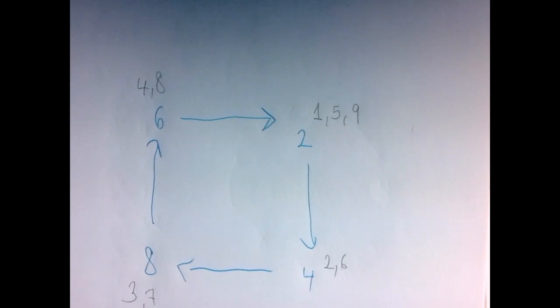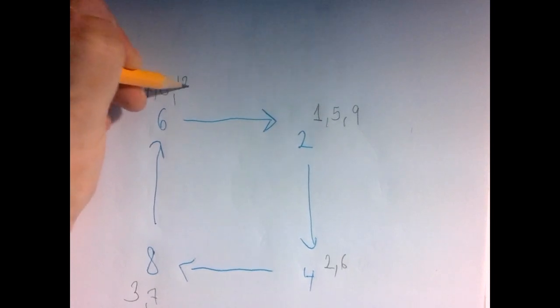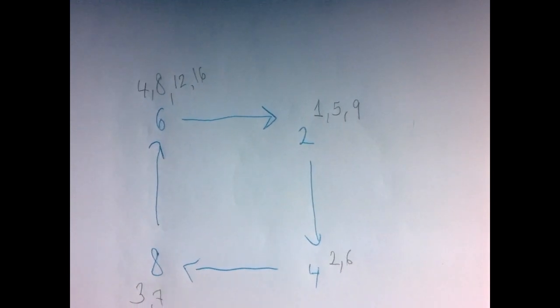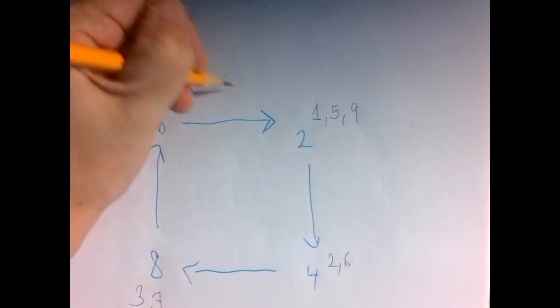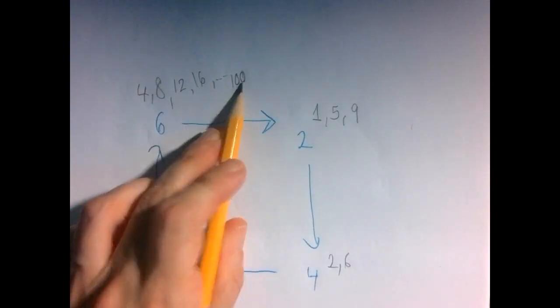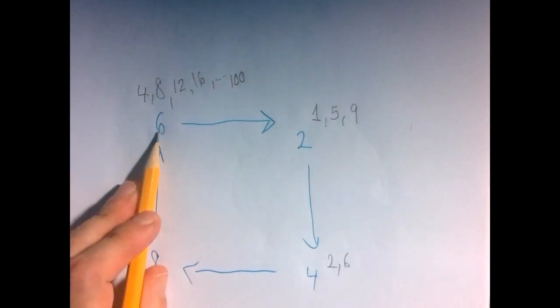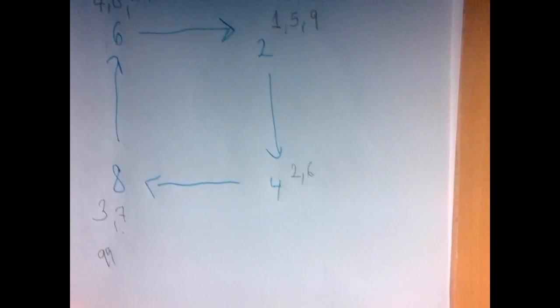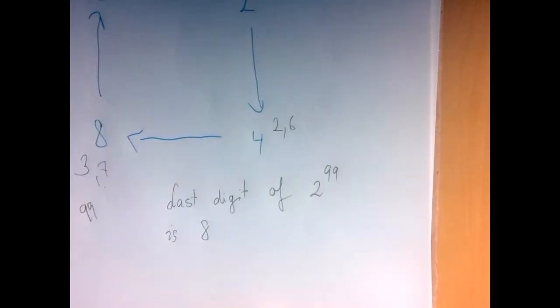Now the magic number here is 4. So if the exponent is 4, or 8, or 12, or 16, or otherwise divisible by 4, then the last digit is 6. That means that 100 falls here, right? 100 is divisible by 4, so the last digit of 2 to the 100th power would be 6. And 99 is just before that. So the last digit of 2 to the 99th power is 8.